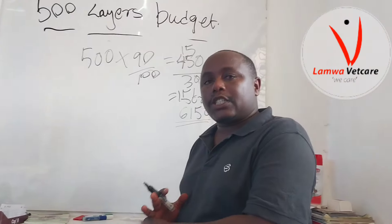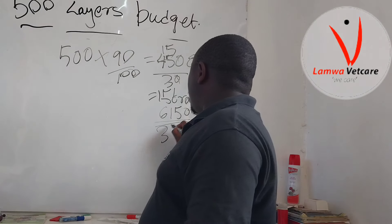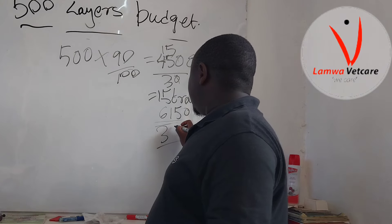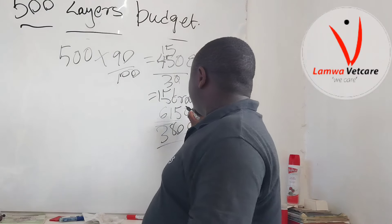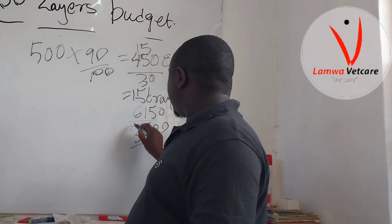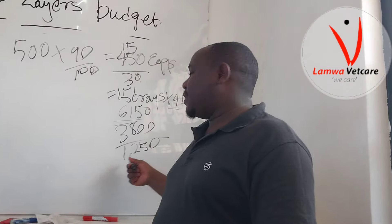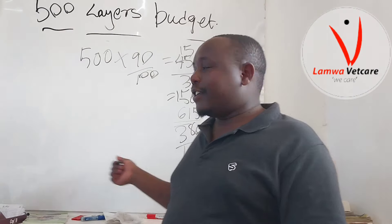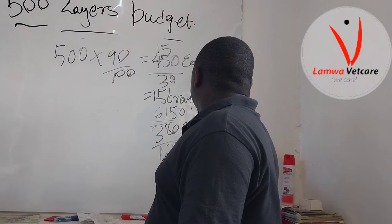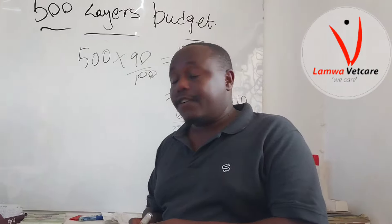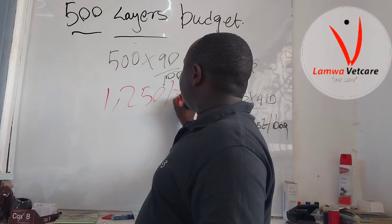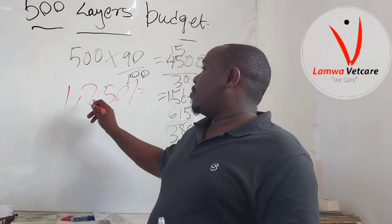A bag of layers mash is currently going at 3,800 shillings on the market. Maintaining the daily revenue of 6,150 shillings against the cost per bag of layers mash at 1,250 shillings — this is the profit that 500 birds will give you if you maintain the market price. The cost per bag of layers mash is 1,250 shillings.